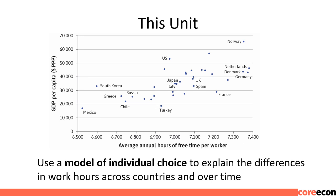Dutch workers enjoy a smaller work week and more vacation time compared to American workers with similar GDP per capita or living standards. Turkish workers, on the other hand, choose the same amount of free time even though their standard of living is much lower. These different choices regarding work and free time can be explained based on preferences for work and free time in different countries and over time, as well as institutional, political, and cultural differences or social preferences.